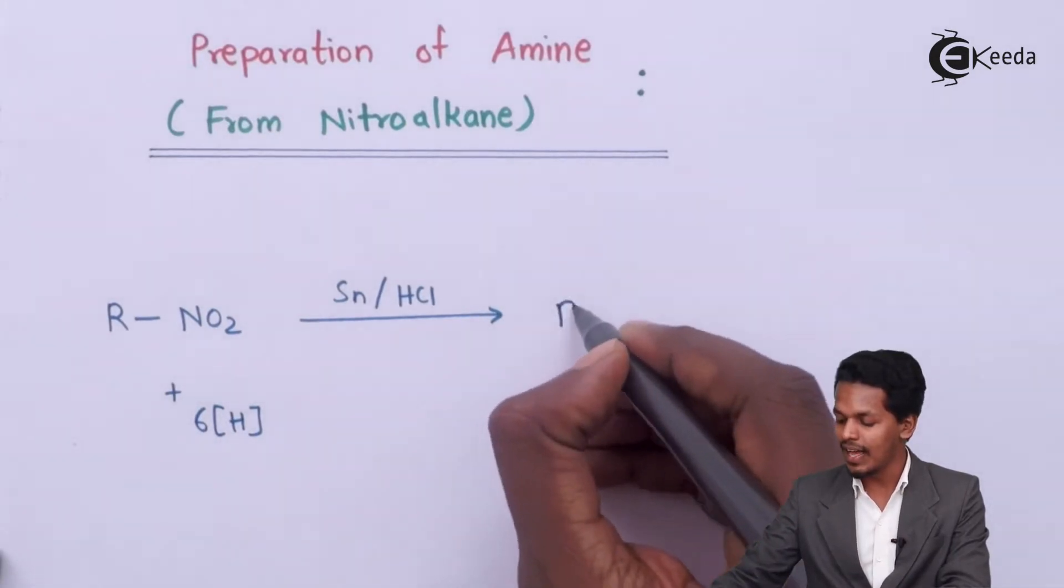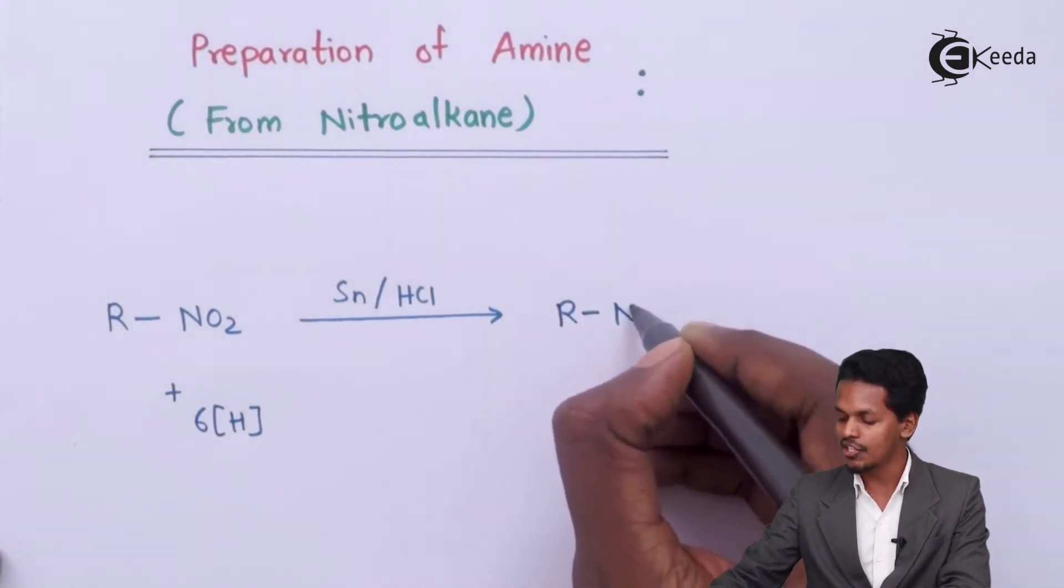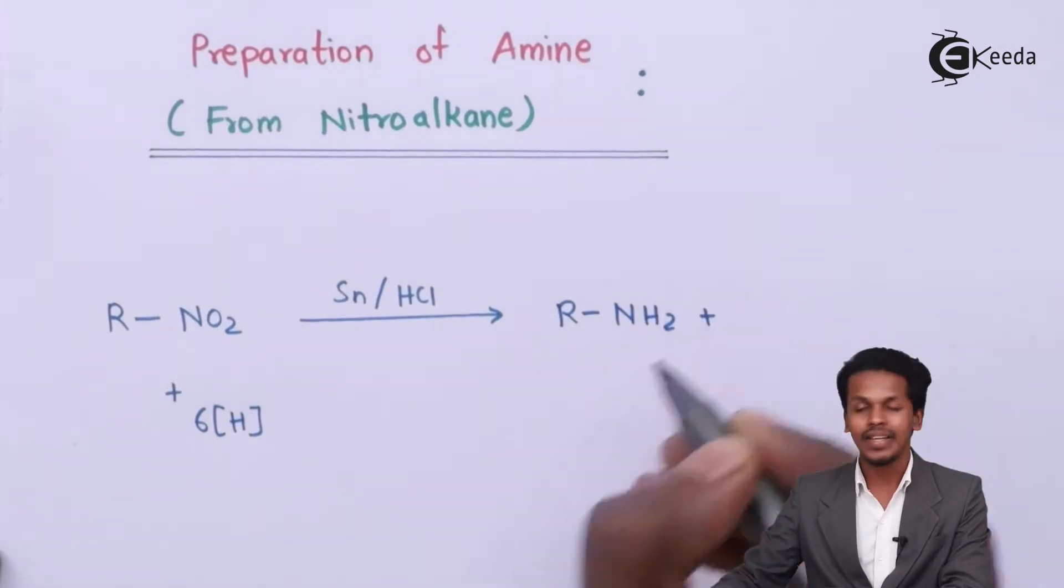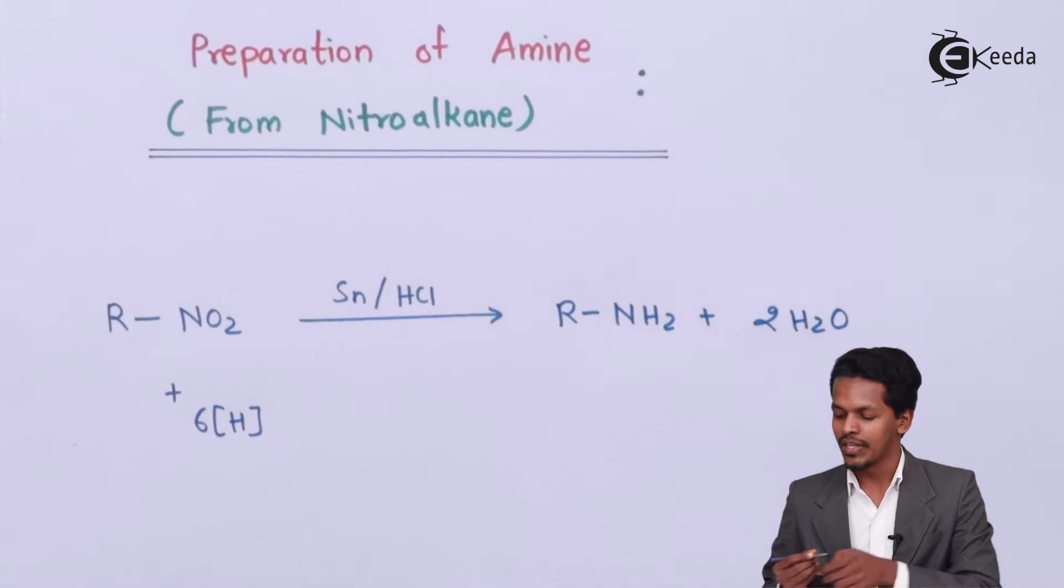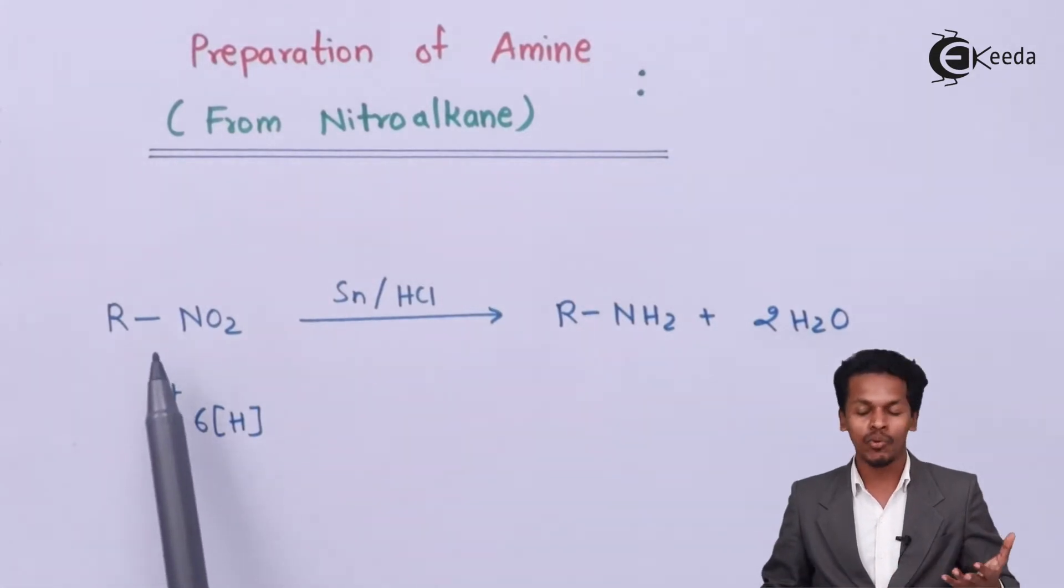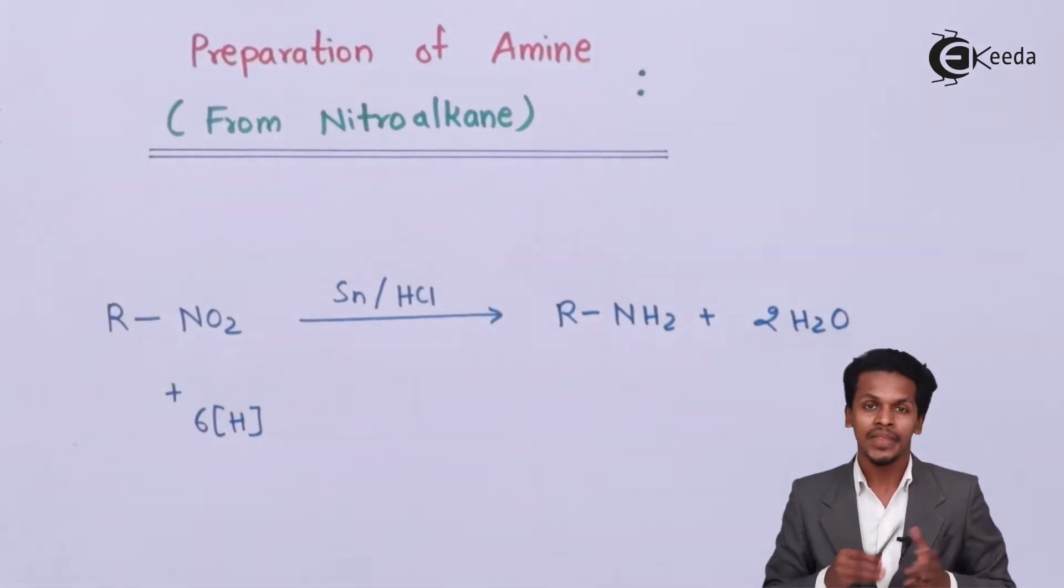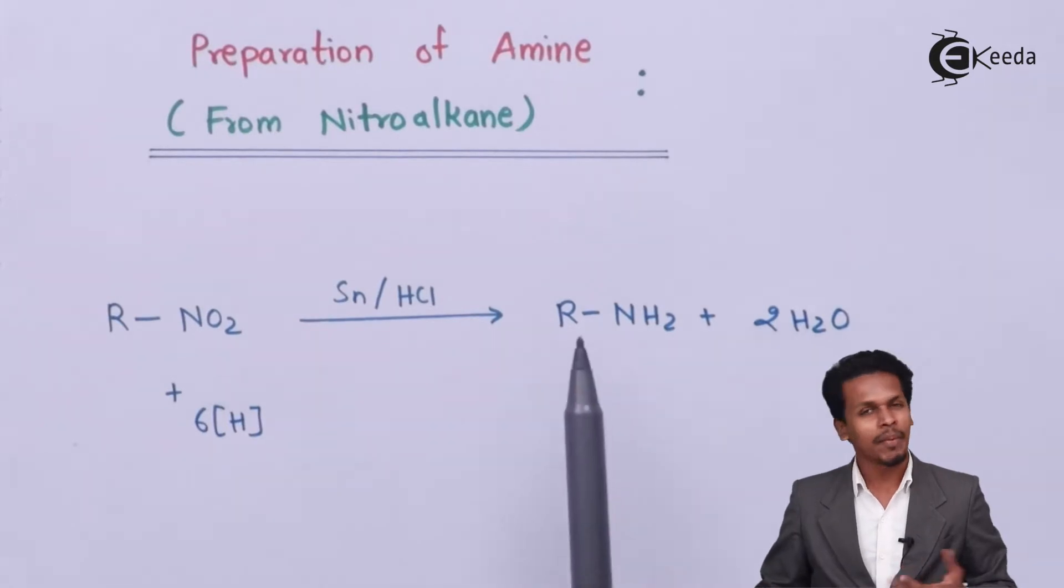we can convert R-NO2 into R-NH2 along with the byproduct that will be removed in the form of 2 moles of H2O. So this is how we convert a nitroalkane into an amine, and that also a primary amine.